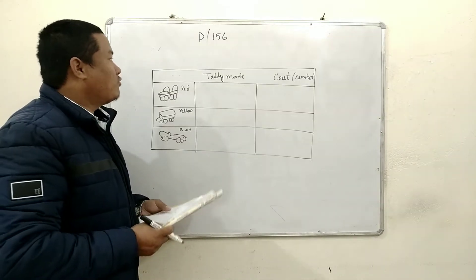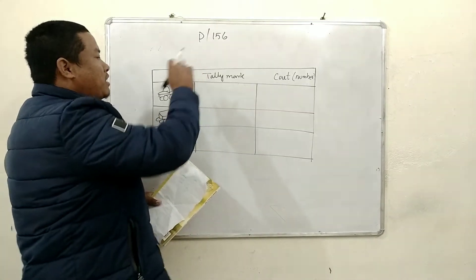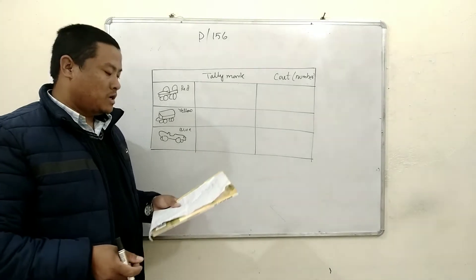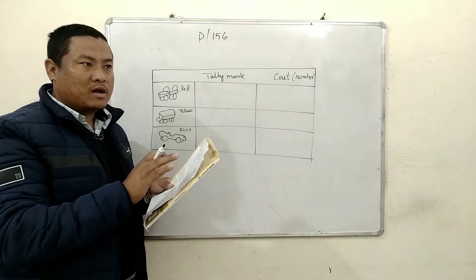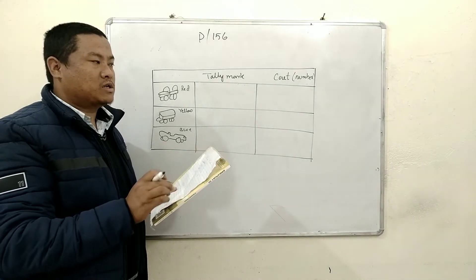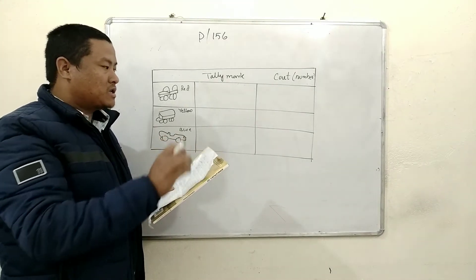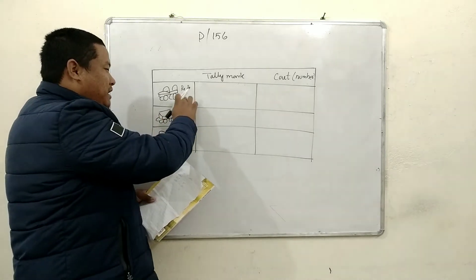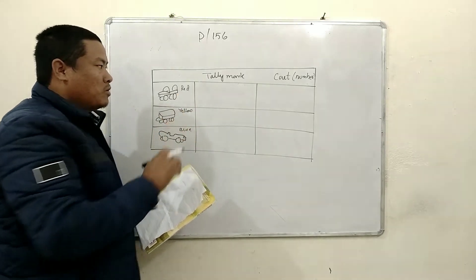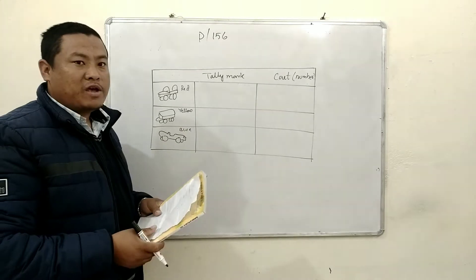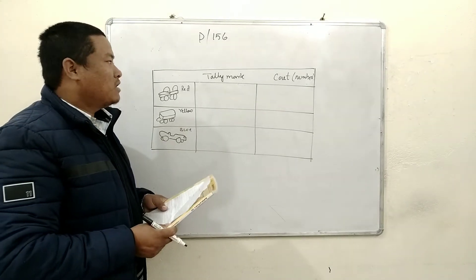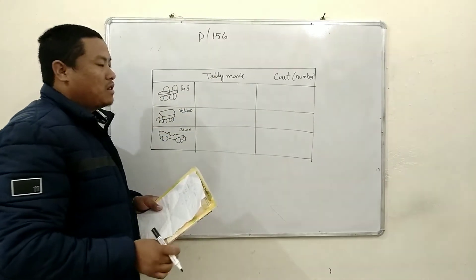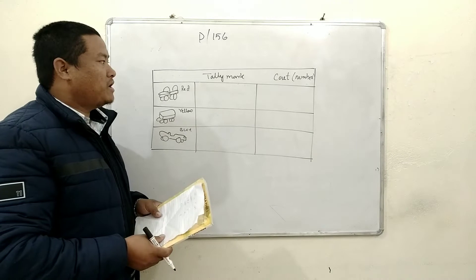Now children, come to page number 156. First tally mark question: how many cars are there? There are many cars in different colors — red, yellow, blue. Now we have to write those cars in tally marks. Now, how to write in tally marks?